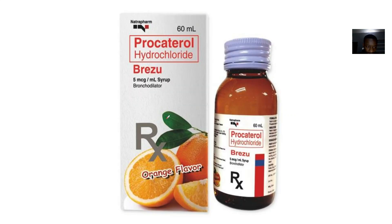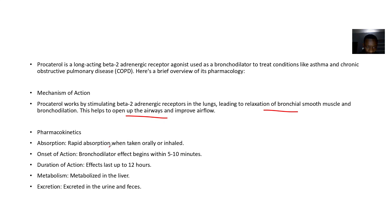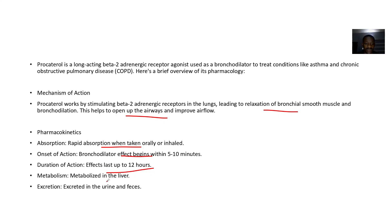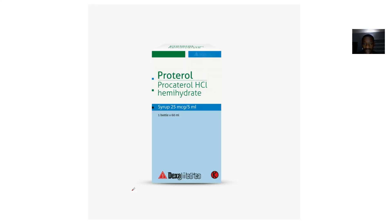Pharmacokinetics: absorption is rapid when taken orally or inhaled. Onset of action — the bronchodilator effects begin within 5 to 10 minutes; duration of action is about 12 hours. Metabolism occurs in the liver, and it is excreted in urine and feces.